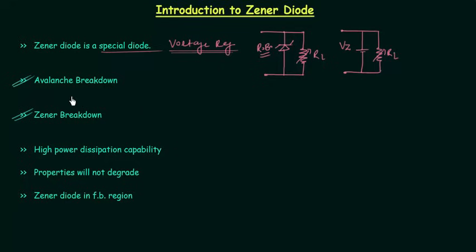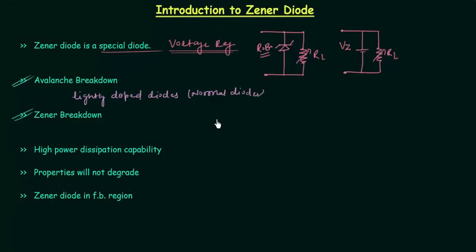Avalanche breakdown occurs in lightly doped diodes. Lightly doped diodes are the normal diodes. Zener diodes are highly doped diodes. In case of lightly doped diodes, when you apply high reverse bias potential, the electrons gain kinetic energy and break the covalent bonds and collide with other electrons. This process frees more electrons and we have a chain reaction, causing a large current to be produced.